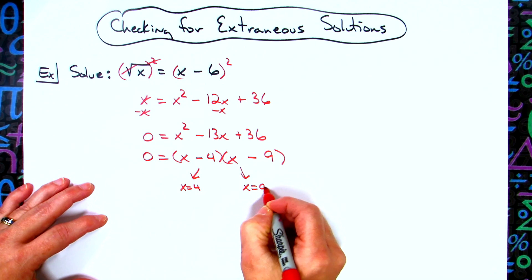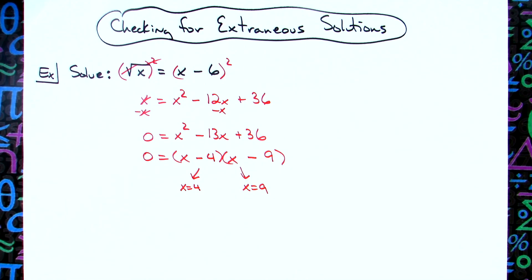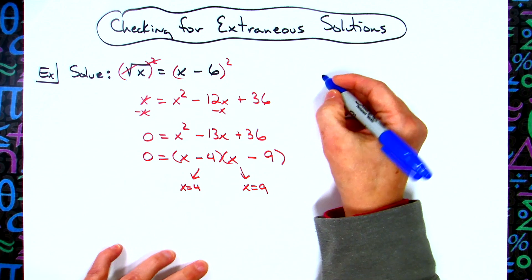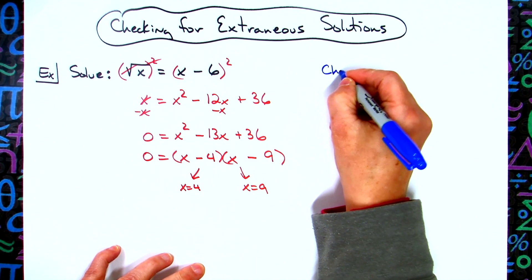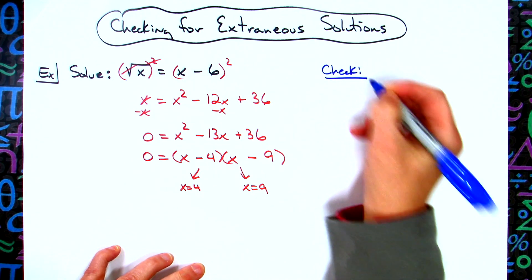Now at this point you cannot just stop and assume that those are your solutions. You need to check to see if they are extraneous roots, so you need to go through that check process.